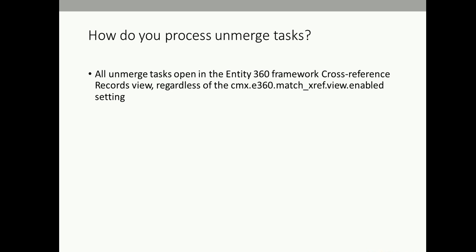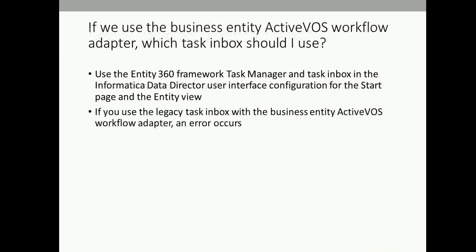How do you process an unmerge task? We just saw how to handle merge tasks; now let's see how to handle unmerge tasks. All unmerge tasks open in the Entity 360 framework Cross Reference Records view, regardless of whether we enable or disable the cmx.e360.match_xref.view.enable property. If we use the business entity ActiveVOS workflow adapter, which tasks in bulk should be used?